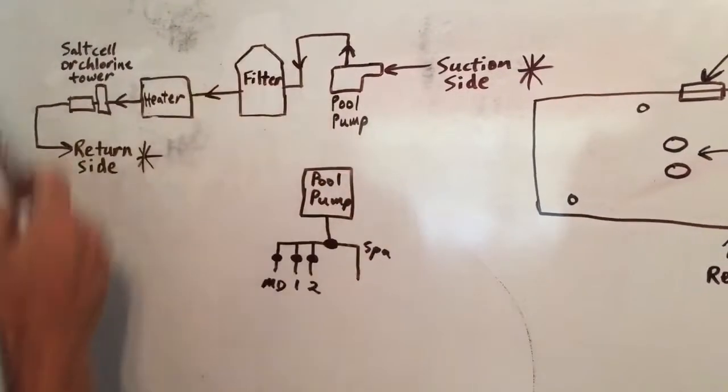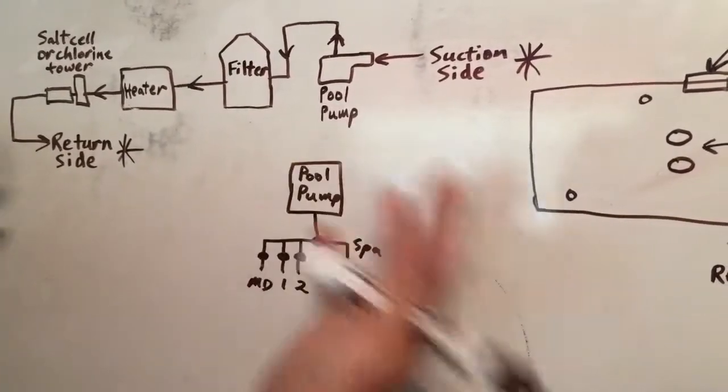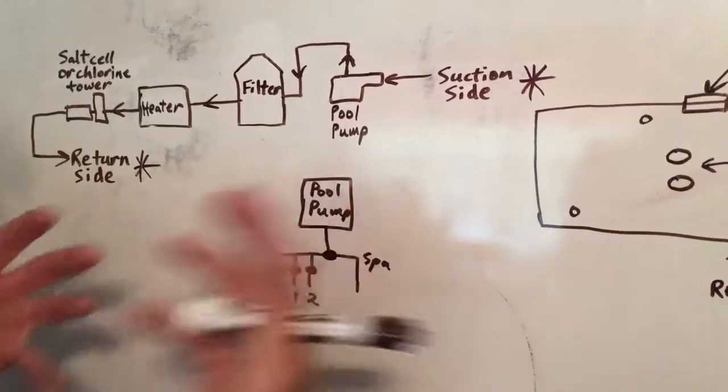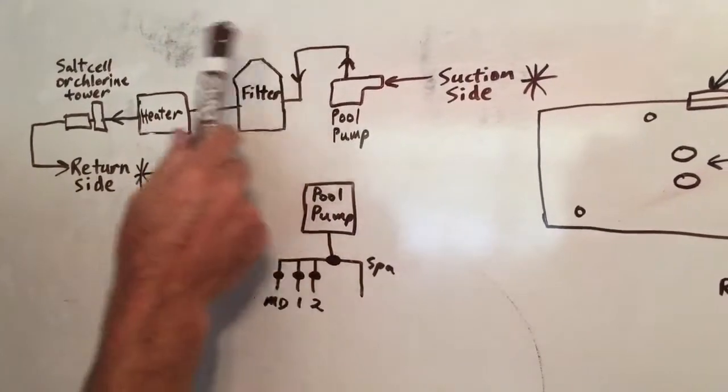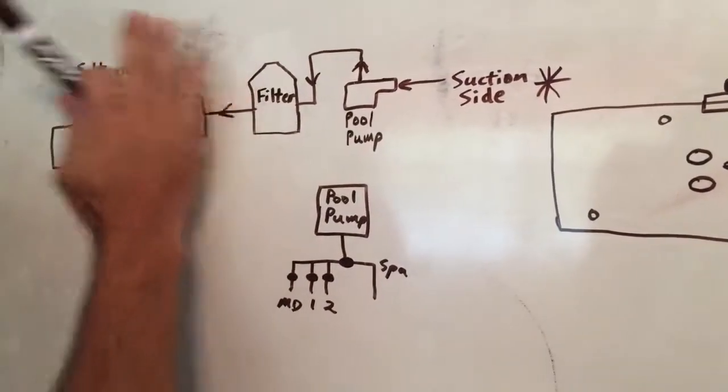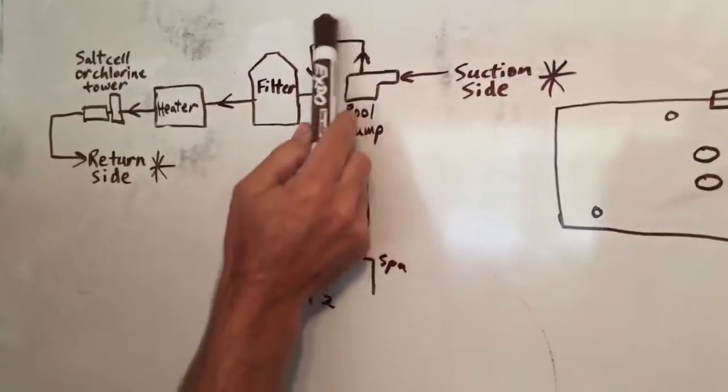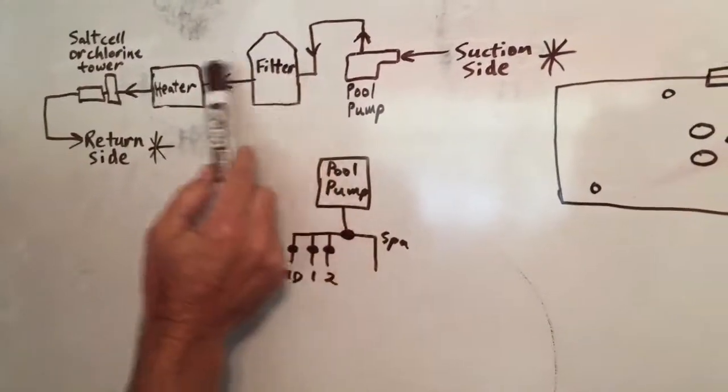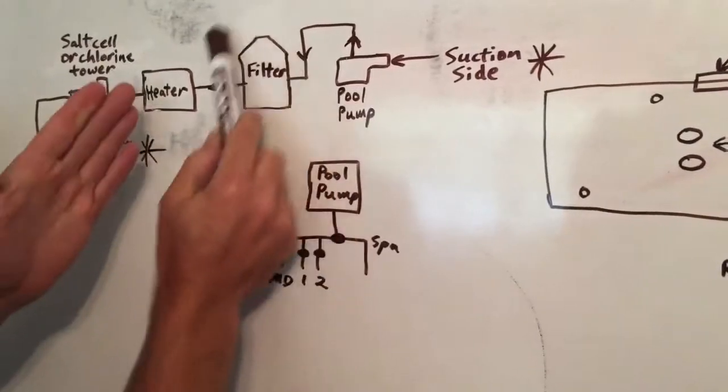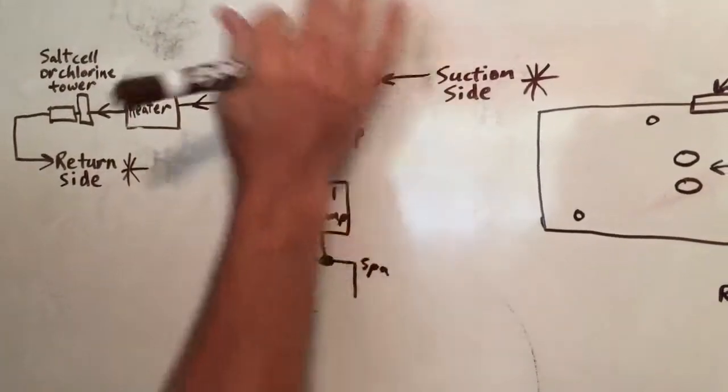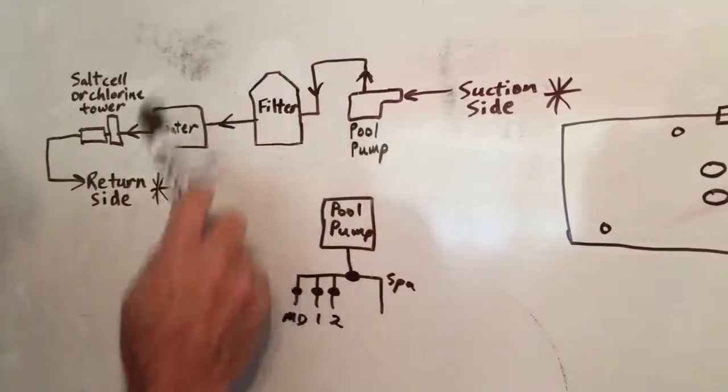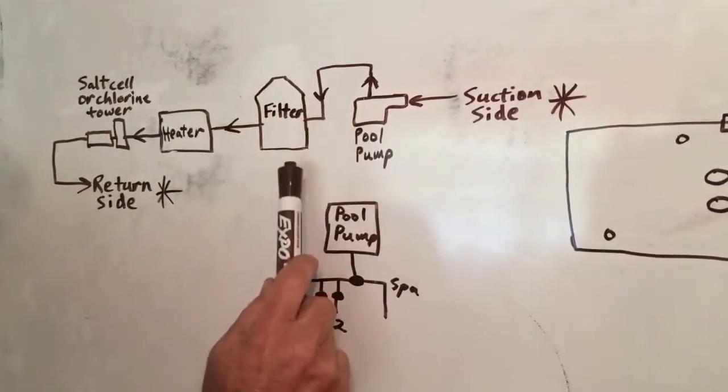And what does the filter do? Well, that's going to pull some debris and contaminants out of the pool water, helps the pool water stay clean. And it also protects the heater and stuff downstream. The pool pump can let some debris come past it, but then everything gets caught into the filter and it's cleaning that water.